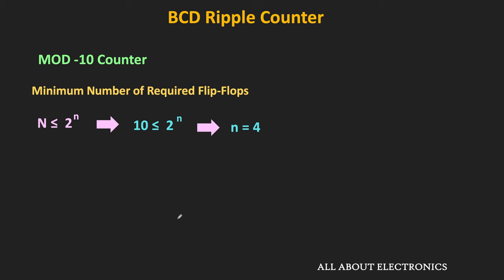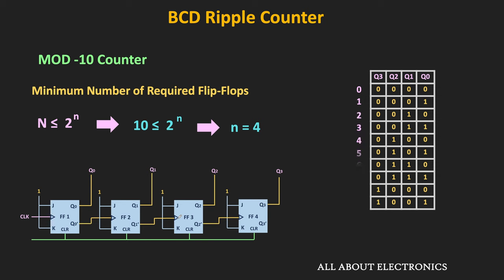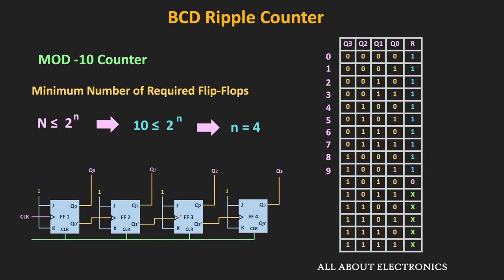Using 4 positive edge-triggered JK flip-flops, the binary up counter counts from 0000 to 1111. We need to select the combinational circuit such that this counter counts from 0000 to 1001, and when the count goes beyond that, it resets to 0000. Up to count 1001, the output of this combinational circuit should remain 1, and when the count goes to 1010, it should generate logic 0 for the clear inputs. We are assuming the clear input is active low.